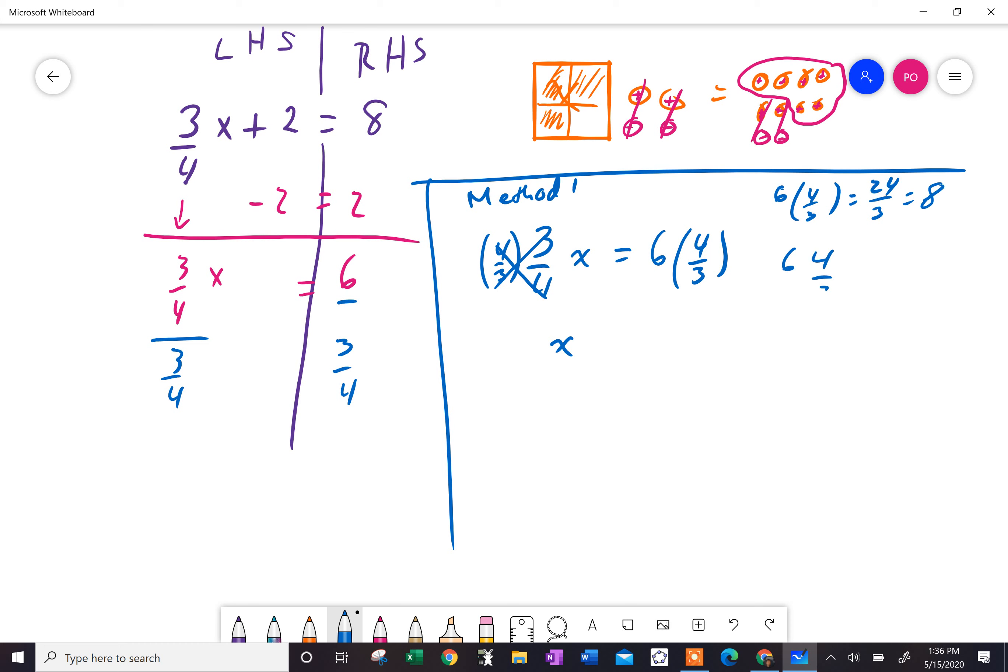You could say three goes into six twice, and then two times four also equals eight. So there's one method. So x equals eight.